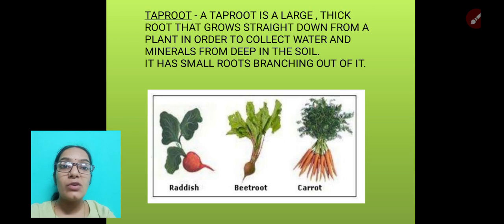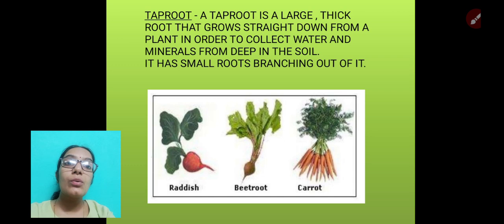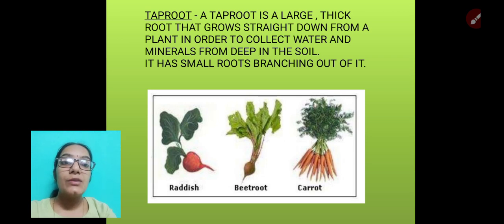The taproot is a single thick root that grows straight down from a plant, and it has small roots branching out of it. Examples of taproot plants are radish, beetroot, carrot, and many more.